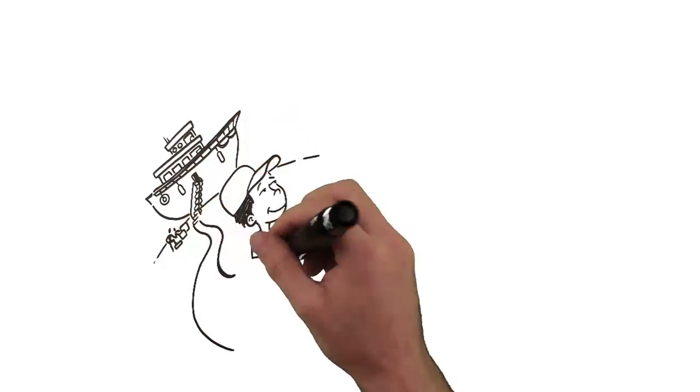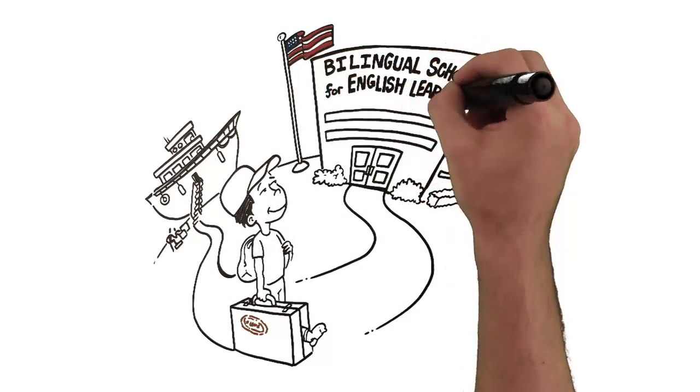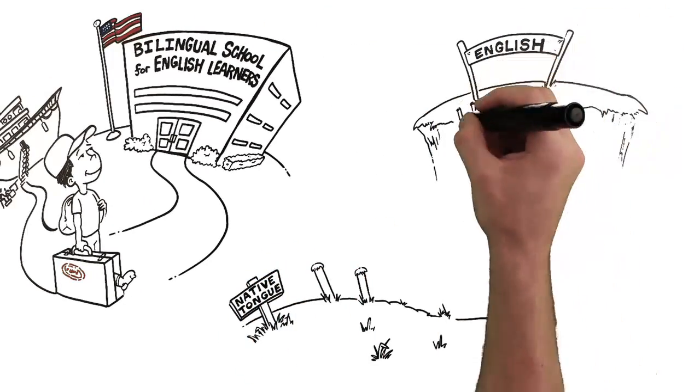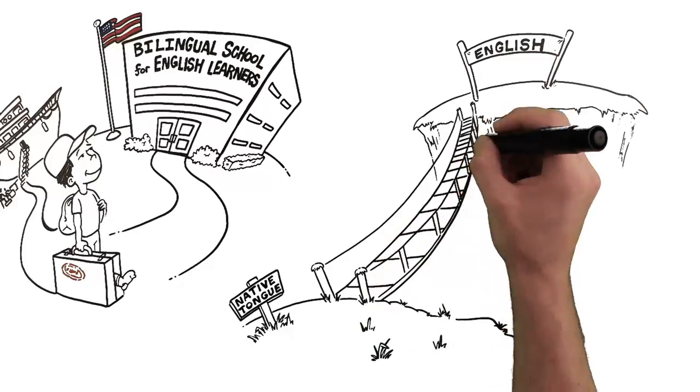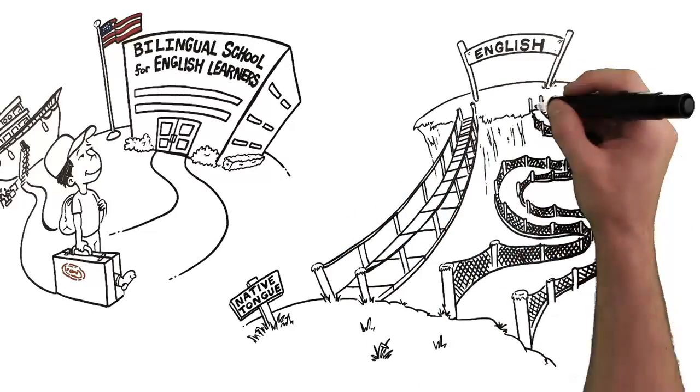Today there are many kinds of language-focused schools in the U.S. There are bilingual schools for kids with limited English skills. These schools teach kids in their native tongue as a bridge to learning English. The bridge can be short, fast-tracking kids into all English, or long, with kids learning in two languages over several years.